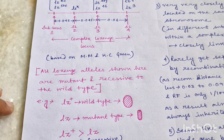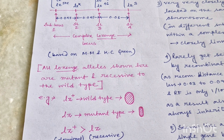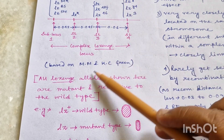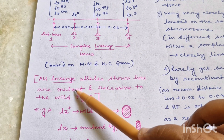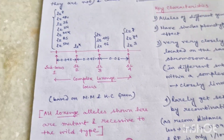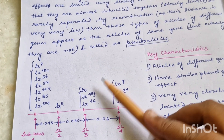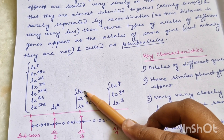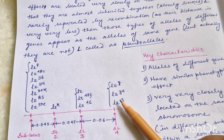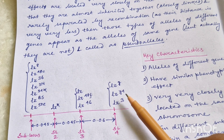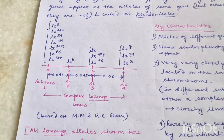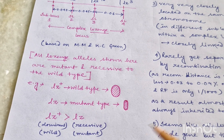Now let us look at the Lozenge locus in Drosophila. All the alleles mentioned in this picture are actually mutant alleles, and all the mutant alleles for this Lozenge locus are recessive to the wild type. Whenever I am talking about LZ, this is a mutant allele and its wild type version will be LZ+. Whenever I am talking about LZ3, it is a mutant allele and its wild type is LZ3+. Whenever talking about wild type alleles, I will put a plus there.